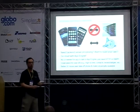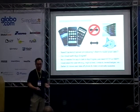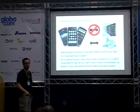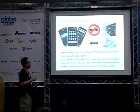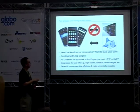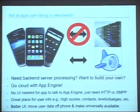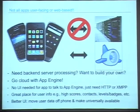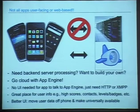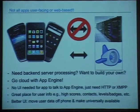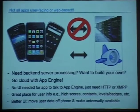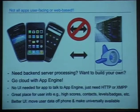App Engine is also good for non-user-facing apps. If you have an app running on a mobile phone, you still have to decide: do I host it myself or take it to the cloud? I think you should do the cloud — you can give users a better experience. Store high scores and contacts there; if someone drops their phone or gets mugged, they can get that data back on a new device. All you need is an HTTP GET or POST to talk to your App Engine app — you don't need a UI.